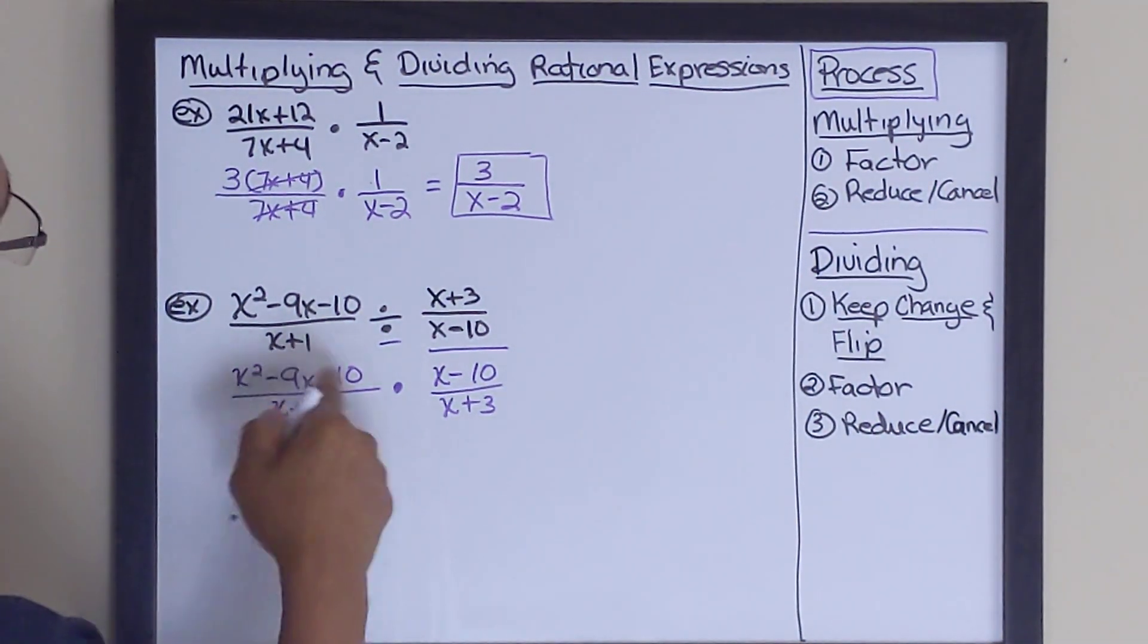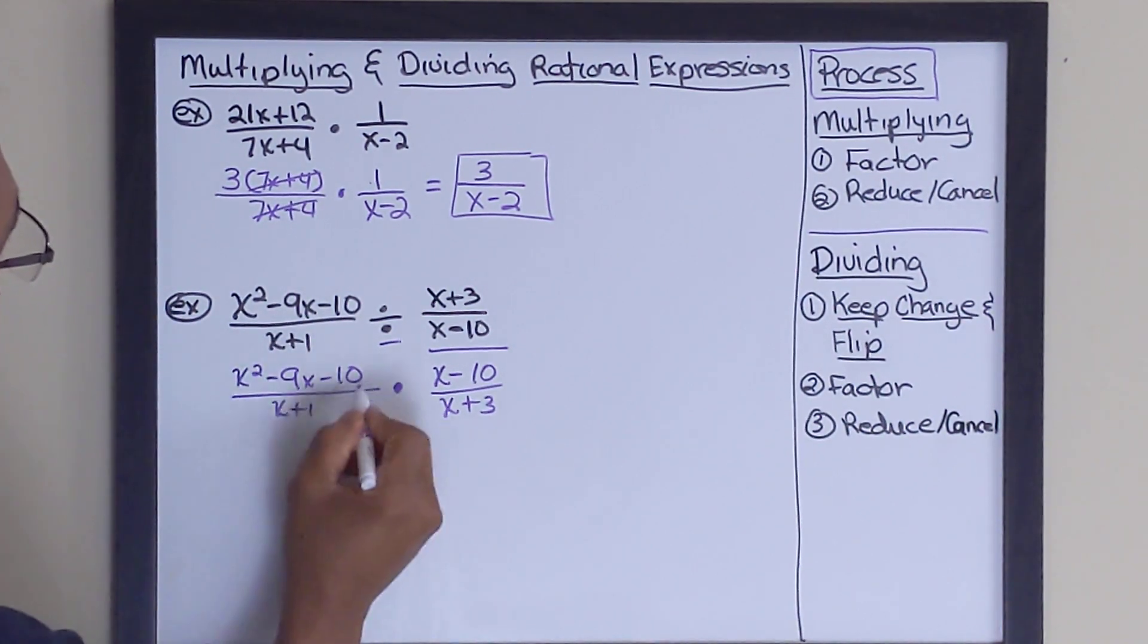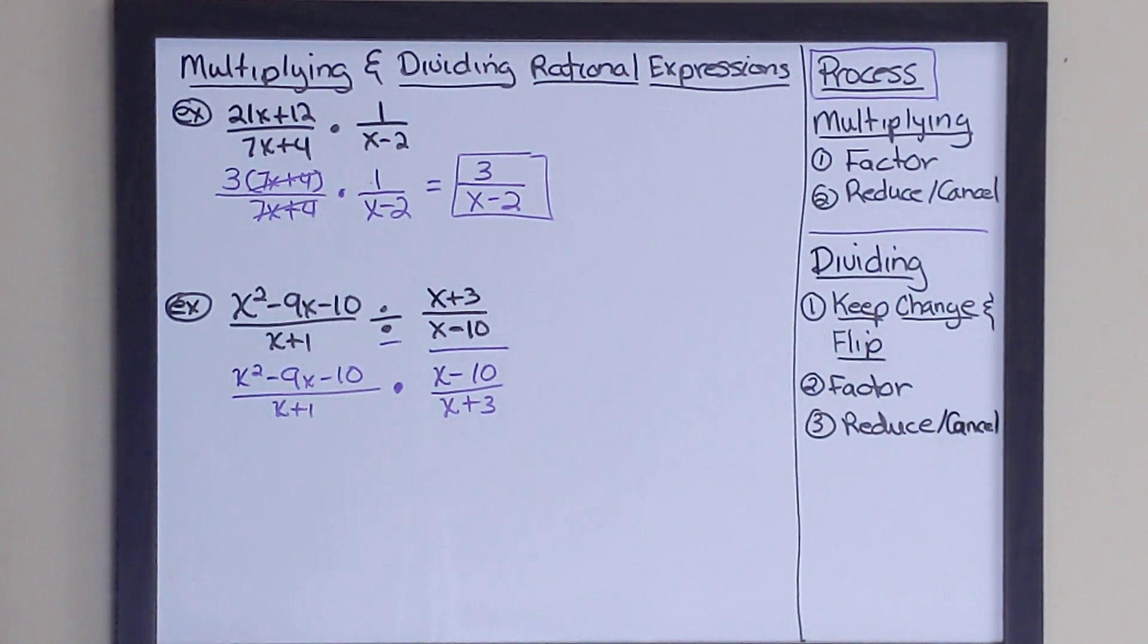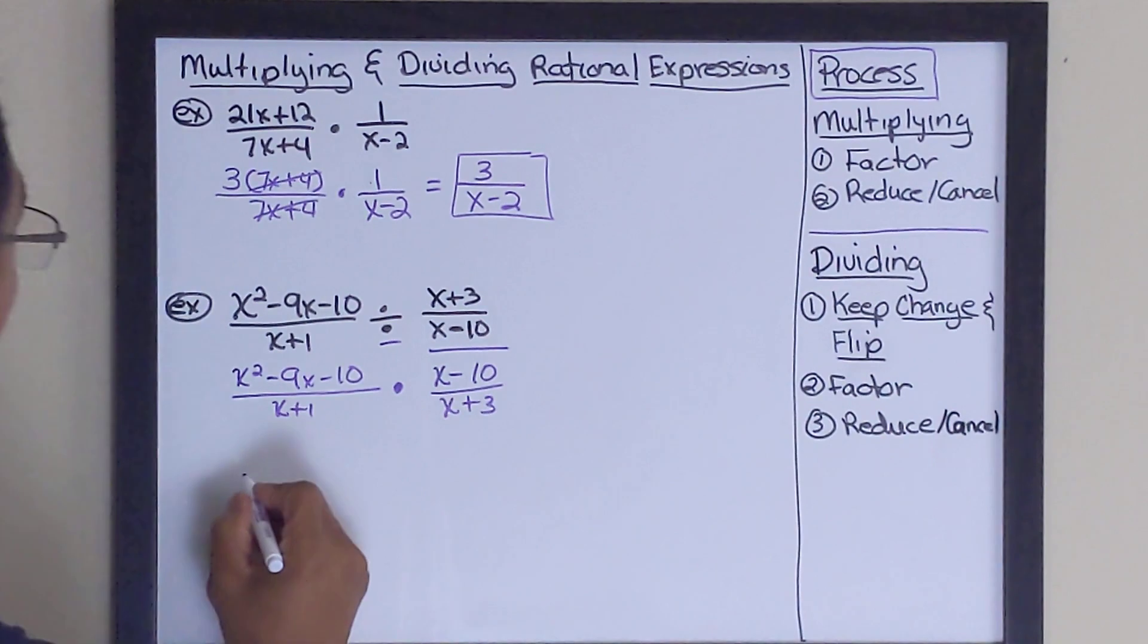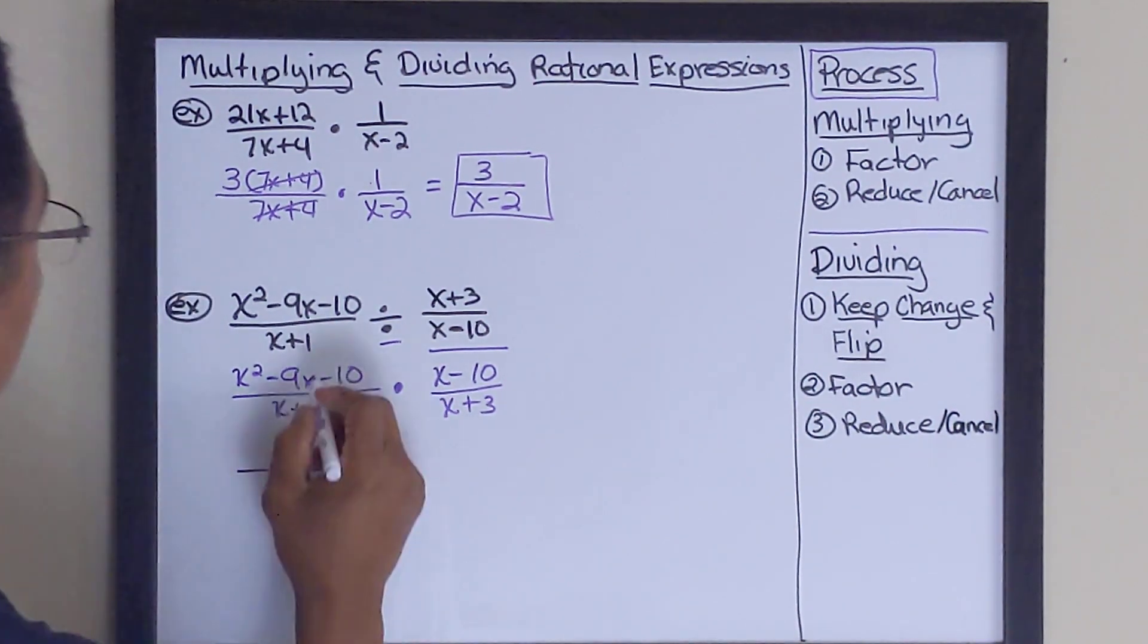Let's go ahead and factor what's factorable. If you look at this numerator, it is factorable using what we know as a is equal to 1 factoring. And once again, that's a whole separate video on how to do all that. But what we're doing is, we're going to go ahead and factor this.